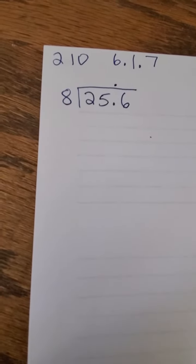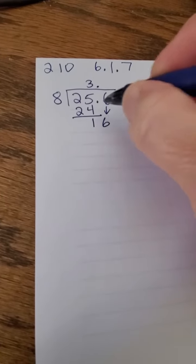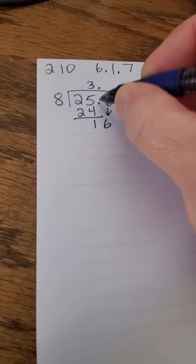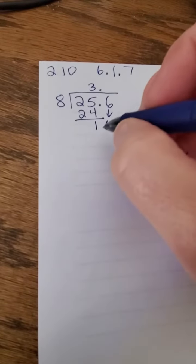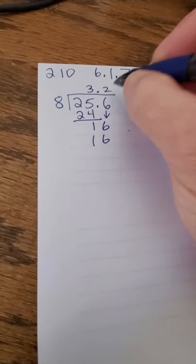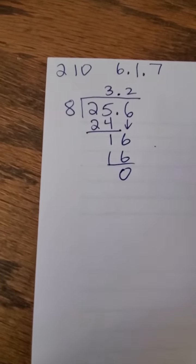8 goes into 25 3 times. Subtract, bring down the 1, just bring down the 6. I'm kind of forgetting about that. I'm leaving these dots up here and not doing anything with them. 8 goes into 16 twice. And there's a 2, no remainder. And that is my final answer, 3.2.